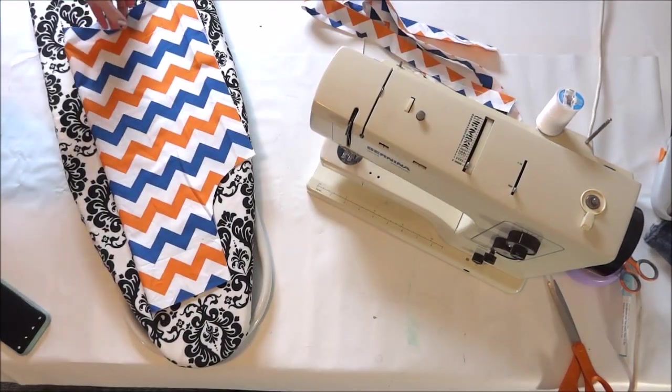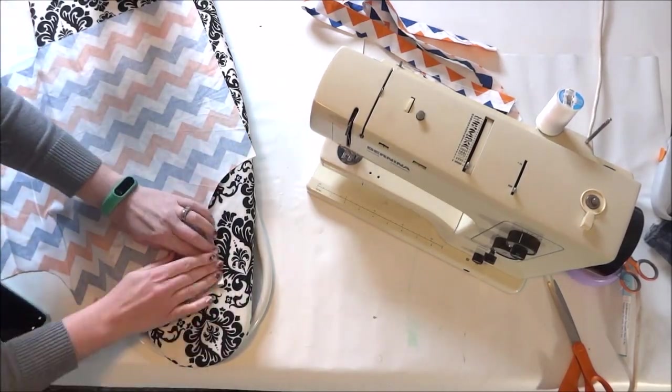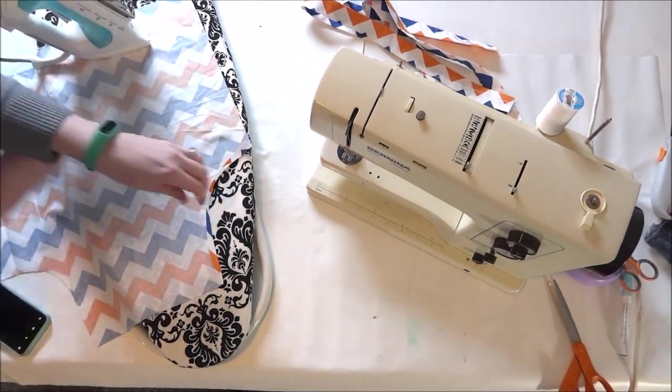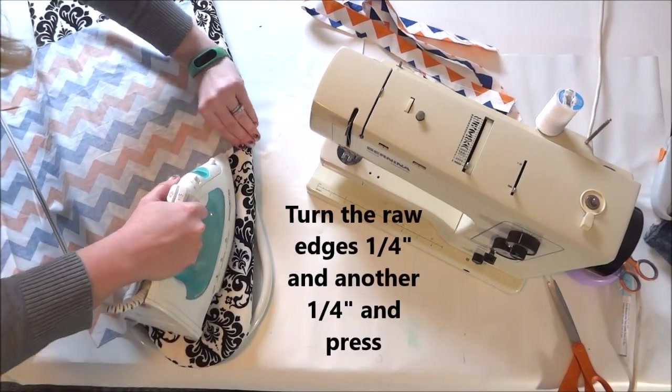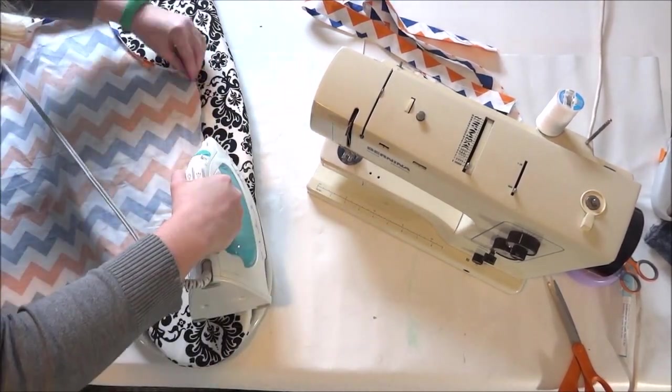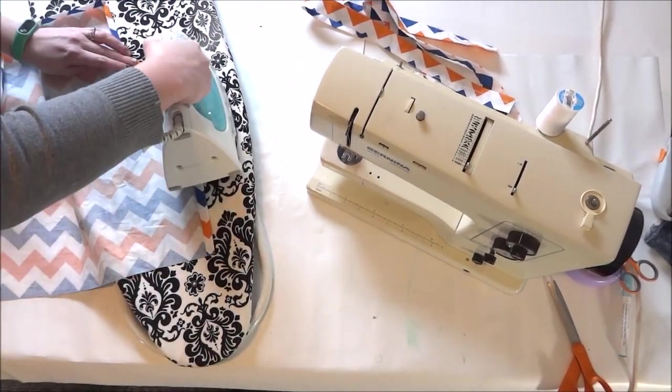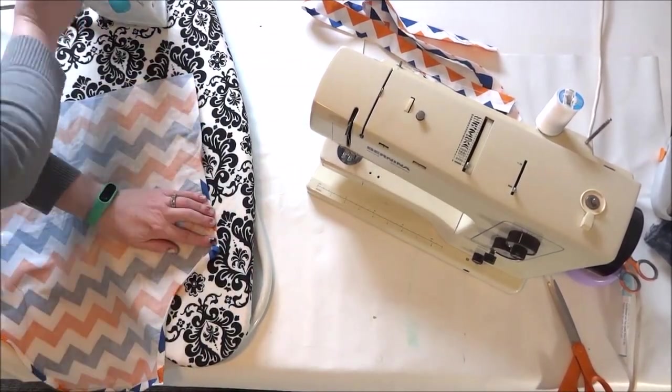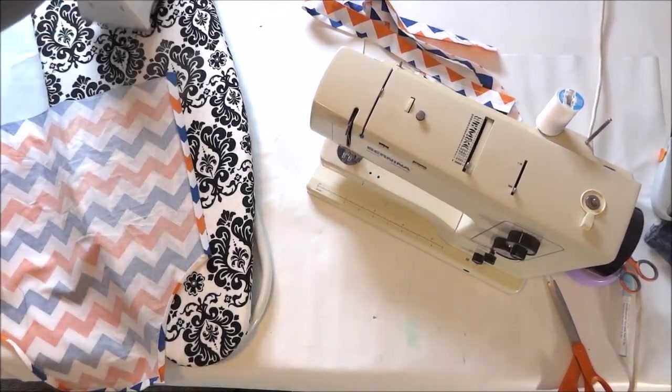Once those are pressed, I'm going to press my apron really well, and then I'm going to fold it along the curved edges a quarter of an inch and press it, and then do that again a quarter of an inch. That's just on those curved edges to start. Once those are done, I'm going to do the two side edges - same thing, quarter of an inch, quarter of an inch - and then the top edge as well.